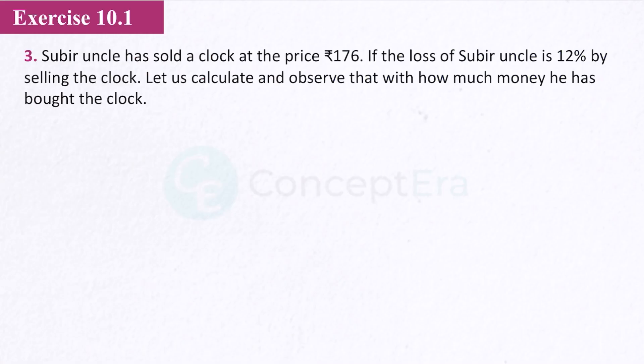Skipping question 2 — it's very easy, you can solve it similarly. Let's start question number 3. Subir uncle has sold a clock at Rs. 176. This means selling price is given as 176 rupees.